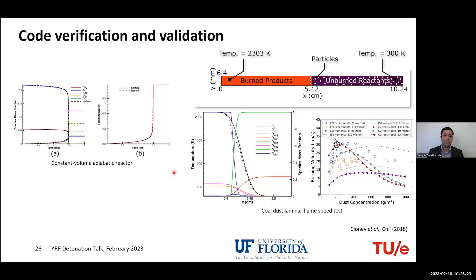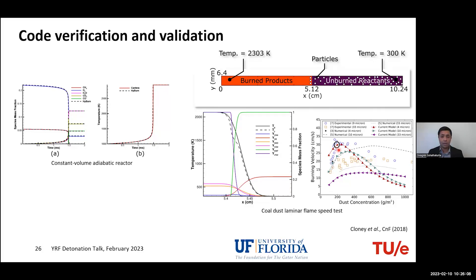When we put all these models together, we must perform code verification and validation. We use an in-house code called HiBurn, developed and maintained by Dr. Hoyam's group at the University of Florida. Starting with a constant-volume adiabatic reactor for methane-air combustion compared to Cantera — showing good correlation — we also performed a coal dust laminar flame speed propagation test. The result matched well with Cloney et al.'s Combustion and Flame 2018 paper, in line with both their numerical results and experimental data.